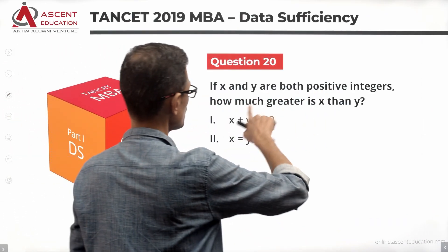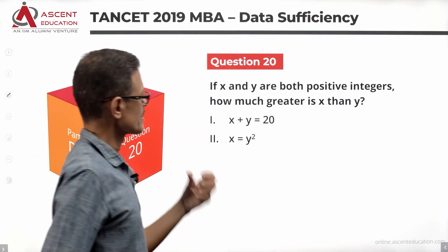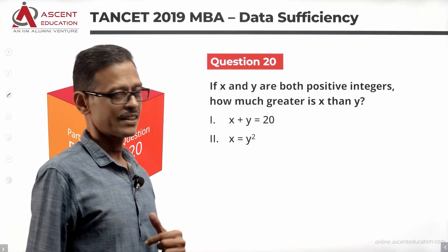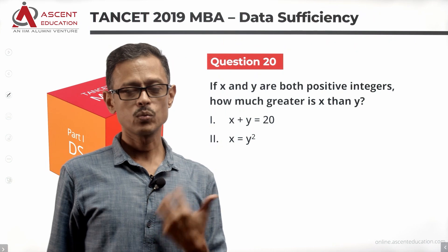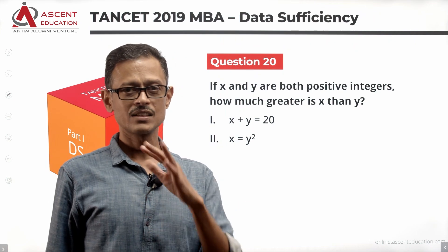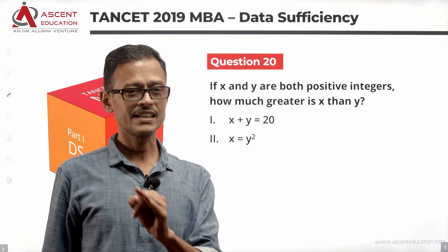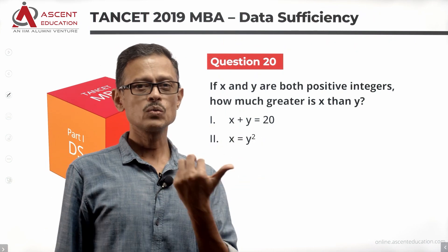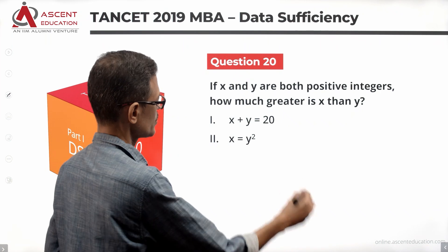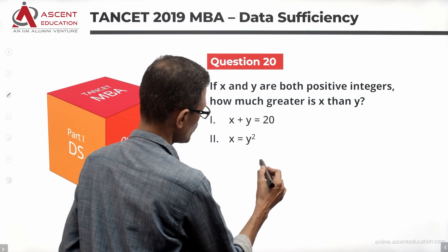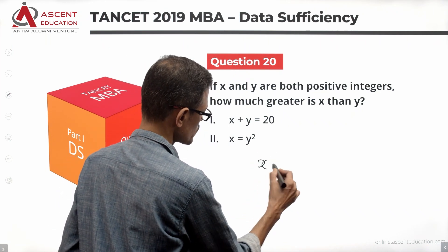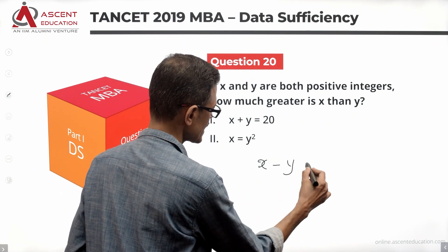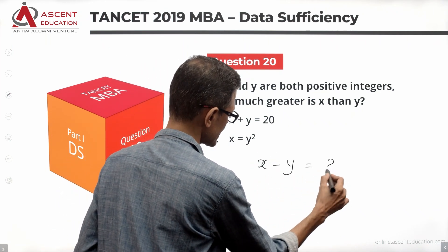If x and y are both positive integers, how much greater is x than y? X and y are positive integers. Essentially, we need to find the value of x minus y.